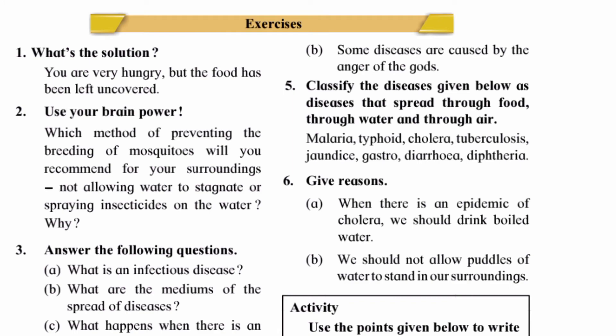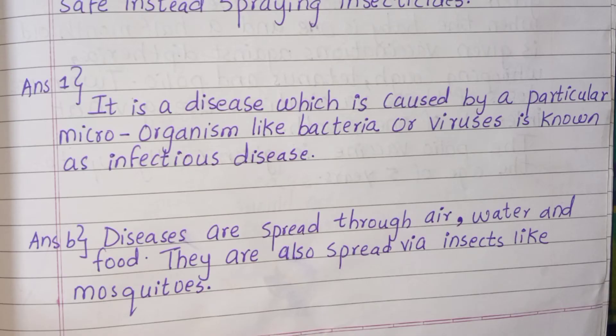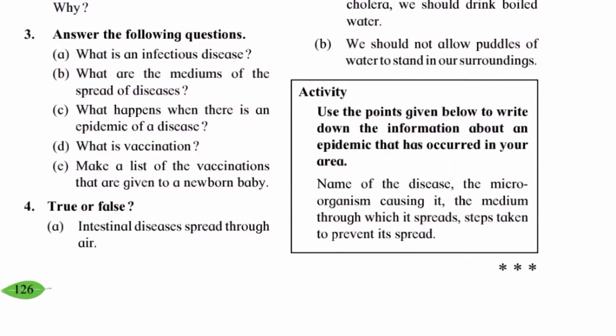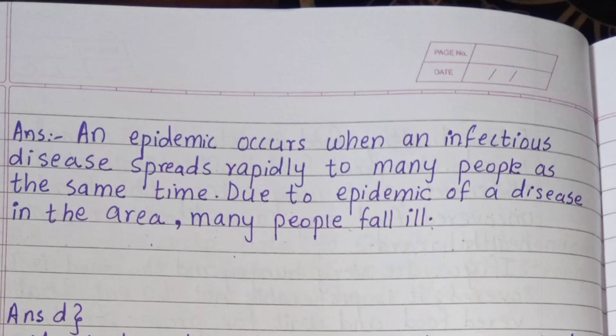Question three B: What are the mediums of the spread of diseases? Answer: Diseases are spread through air, water, and food. They are also spread via insects like mosquitoes.